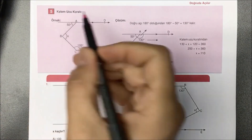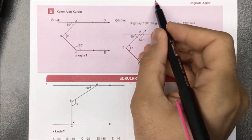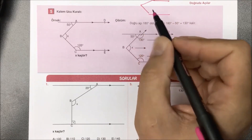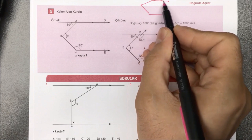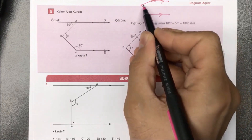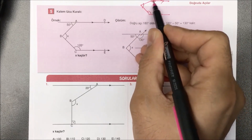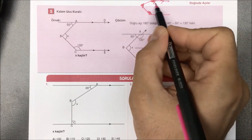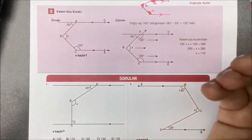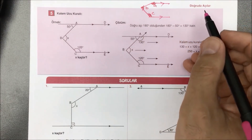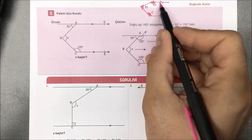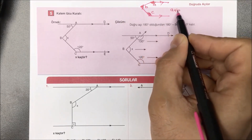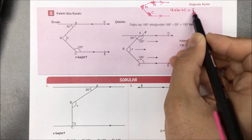Beşinci türümüzde kalem ucu kuralı var. Paralel iki doğru arasında az önce iki açının toplamını öğrenmiştik. Şimdi ise paralellik var ve bir, iki, üç açı var; buna kalem ucu kuralı diyoruz. Kimisi füze der, kimisi sivri uç der. Kural gereği paralel iki doğru arasındaki üç açının toplamı 360 derecedir.